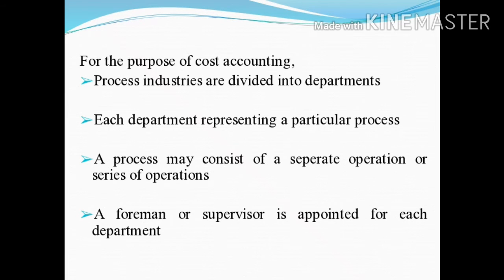For the purpose of cost accounting, process industries are divided into departments, each department representing a particular process. A process may consist of a separate operation or a series of operations. A foreman or supervisor is appointed for each department, and this foreman or supervisor is responsible for the efficient functioning of his department.